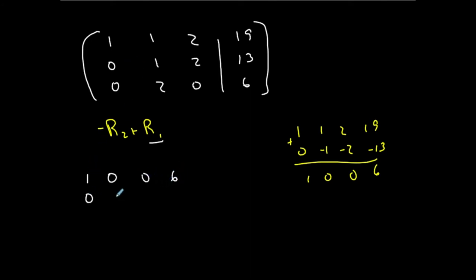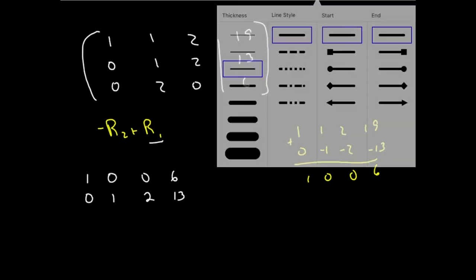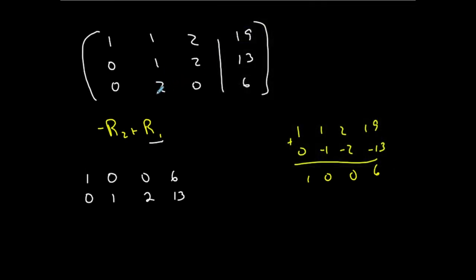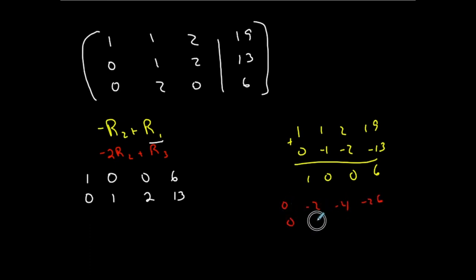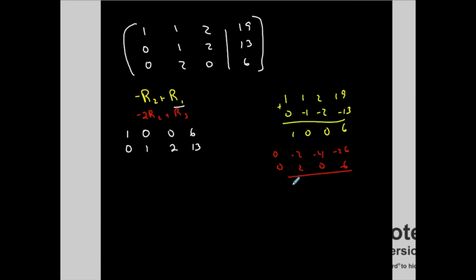Row 2 is not changing: 0, 1, 2, 13. I also want to make the entry in row 3 a zero. So I do negative 2 times row 2 added to row 3. Row 3 becomes 0, 0, negative 4, negative 32.